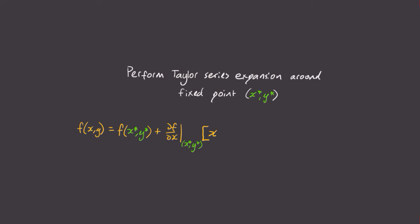Next, we're going to perform a Taylor series expansion around this fixed point. This means writing our function f as an infinite polynomial. In this case, it can be written as f evaluated at the fixed point, plus the partial of f with respect to x evaluated at the fixed point, times x minus x star, plus the partial of f with respect to y evaluated at the fixed point, times y minus y star, plus higher order terms.